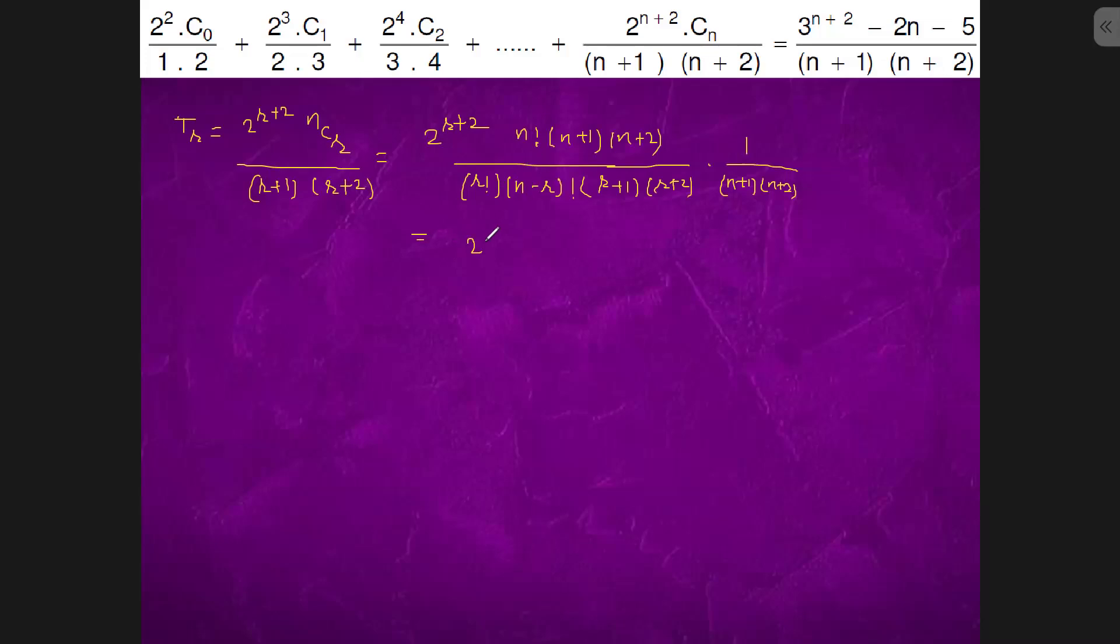It will be 2^r plus 2 into n plus 2 factorial upon r plus 2 factorial n minus r factorial.